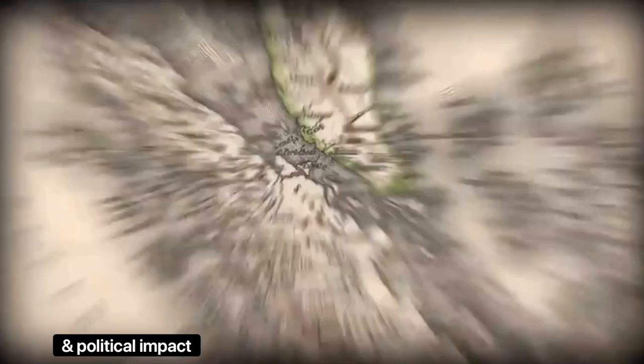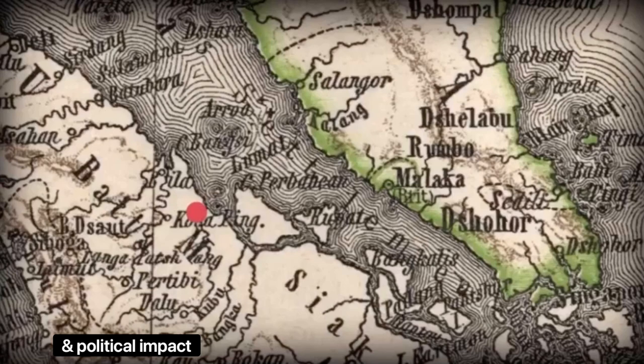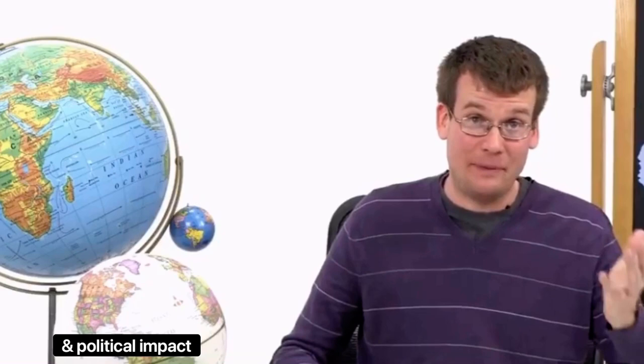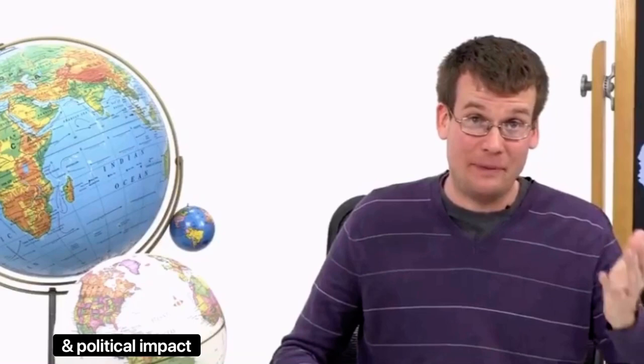You can see how it could act as a choke point for trade. Any city that controlled that strait could stop ships from going through it, or at least tax them. And that's exactly what happened, to such an extent that a powerful merchant state called Srivijaya rose up on Sumatra. And for a while, Srivijaya dominated trade in the region because there were so many ships going through the Strait of Malacca to and from China.